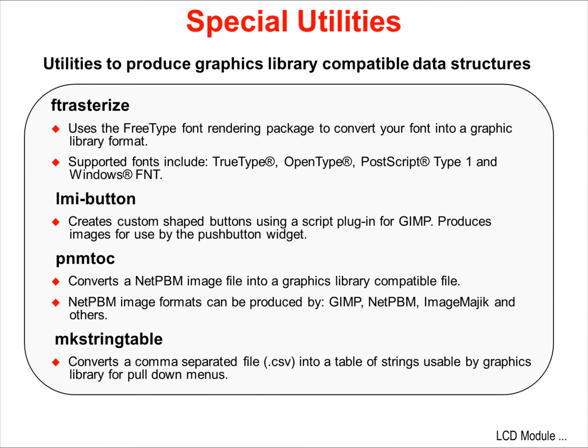There are several utilities included in the graphics library that allow you to create compatible data structures that the library can understand. Frasterize converts your font into a font that the graphics library can understand. LMI Button creates custom shaped buttons using a GIMP plug-in — it will produce an image, for instance your company logo, for use by the push button widget. GIMP is an open source image manipulation tool. PNM2C converts a net pbm image file into a file understandable by the graphics library, and several image manipulation tools handle the net pbm image format, including GIMP. MakeStringTable converts a comma-separated file into a table of strings for use by the list box widget.